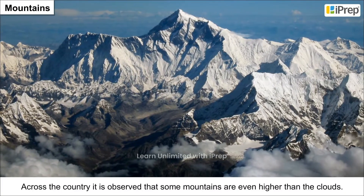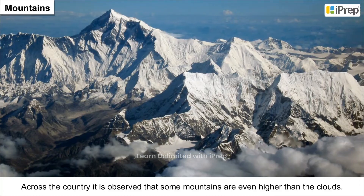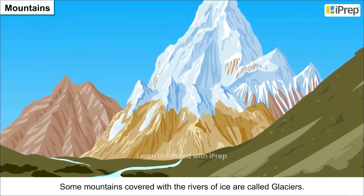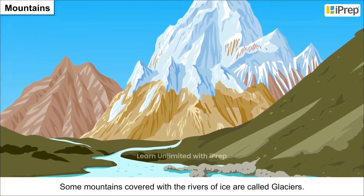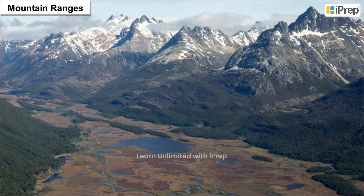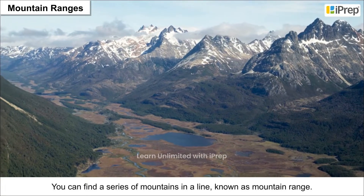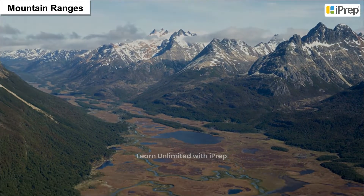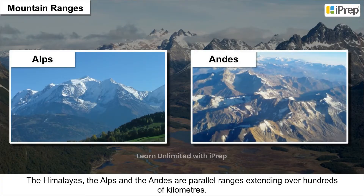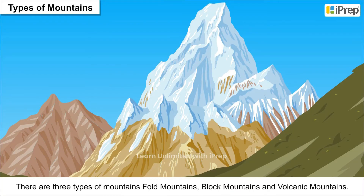Across the country it is observed that some mountains are even higher than the clouds. Some mountains covered with rivers of ice are called glaciers. You can find a series of mountains in a line known as a mountain range. The Himalayas, the Alps, and the Andes are parallel ranges extending over hundreds of kilometers.